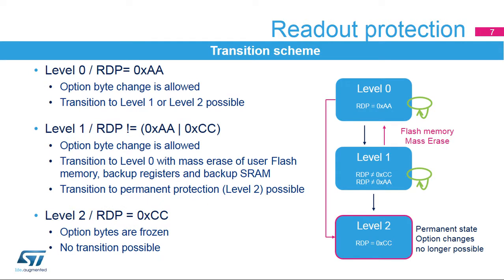This slide shows the possible transitions between each readout protection level. It is always possible to raise the protection level, but regression is only possible between level 1 and level 0, with the consequence of a full user flash erase operation. Note that the RDP level is coded in one option byte: level 0 is coded by an 0xAA value, level 2 is coded by a 0xCC value, and level 1 is coded by any value other than 0xAA or 0xCC.